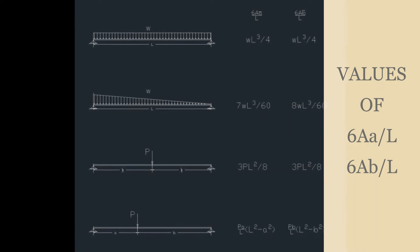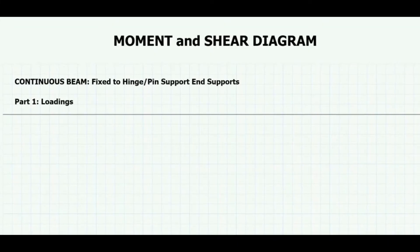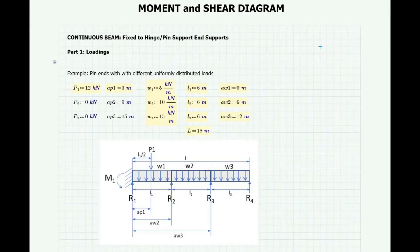For other types of loadings, these are the derived formulas for the expression 6Aa over L or 6Ab over L. Now let's get into the example. We first define the loadings. For this example, we have a continuous beam with one end fixed and the other end hinged or pin support. It carries uniformly distributed loads W1, W2, W3 with specified lengths L1, L2, and L3. The total length of the beam is 18 meters. The distances of these loads are referenced from the starting point R1. The first span has an additional point load P1 at a distance AP1 equals 3 meters from R1. P2 and P3 are written in just in case point loads are added for the other two spans, but for this example they are kept at zero.